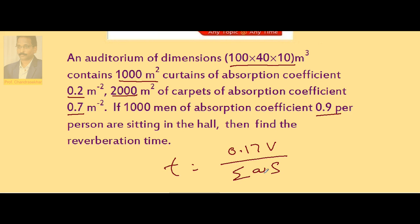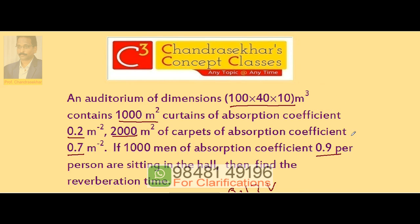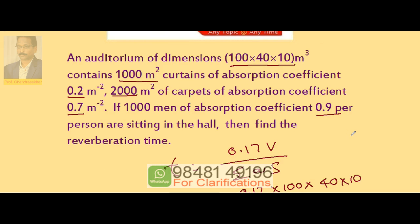Now let us substitute the given values: volume 100 x 40 x 10. So 0.17 x 100 x 40 x 10 divided by sigma a s.